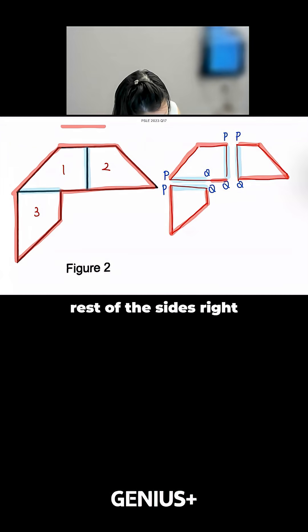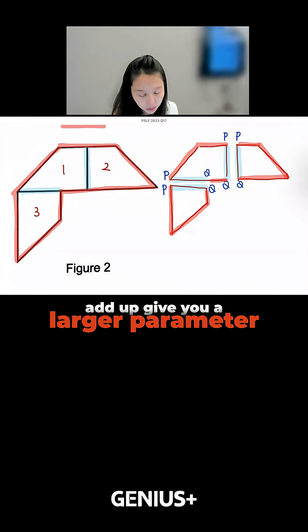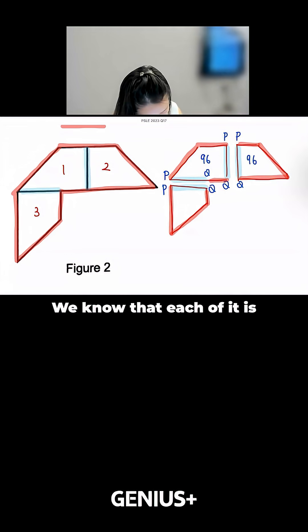If I go around the rest of the sides, it's exactly the same as what we did earlier for the red sides. So actually the blue and the red sides add up to give you a larger perimeter. We know that each of it is 96.